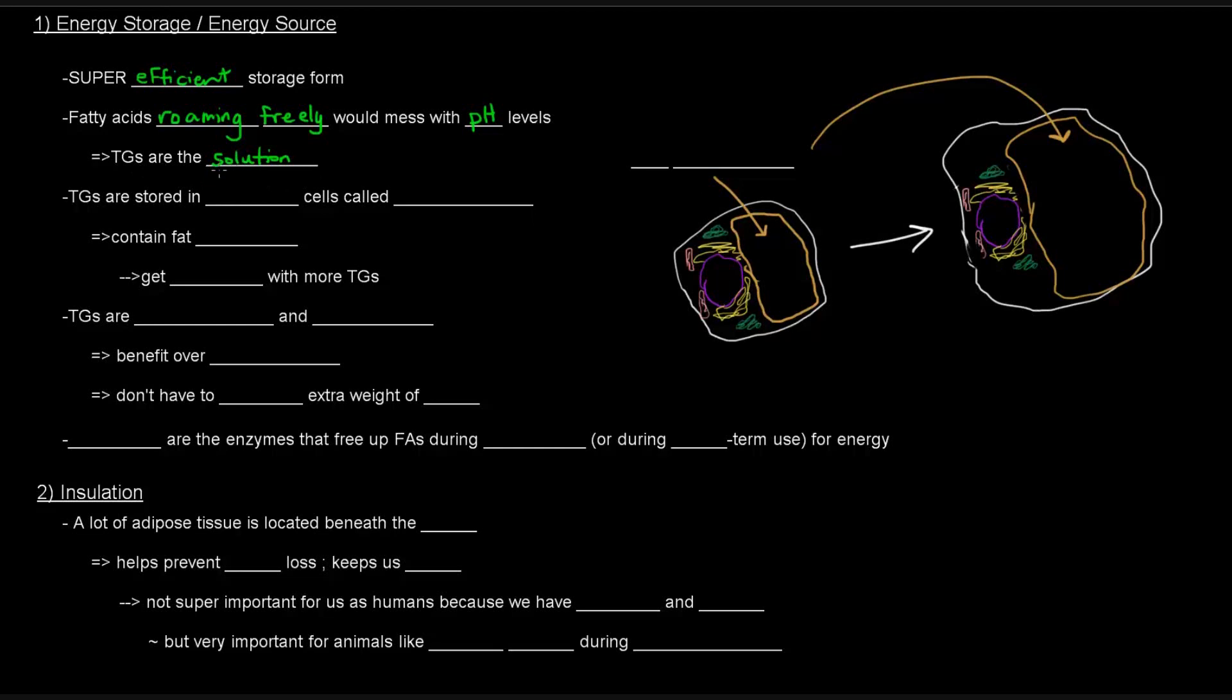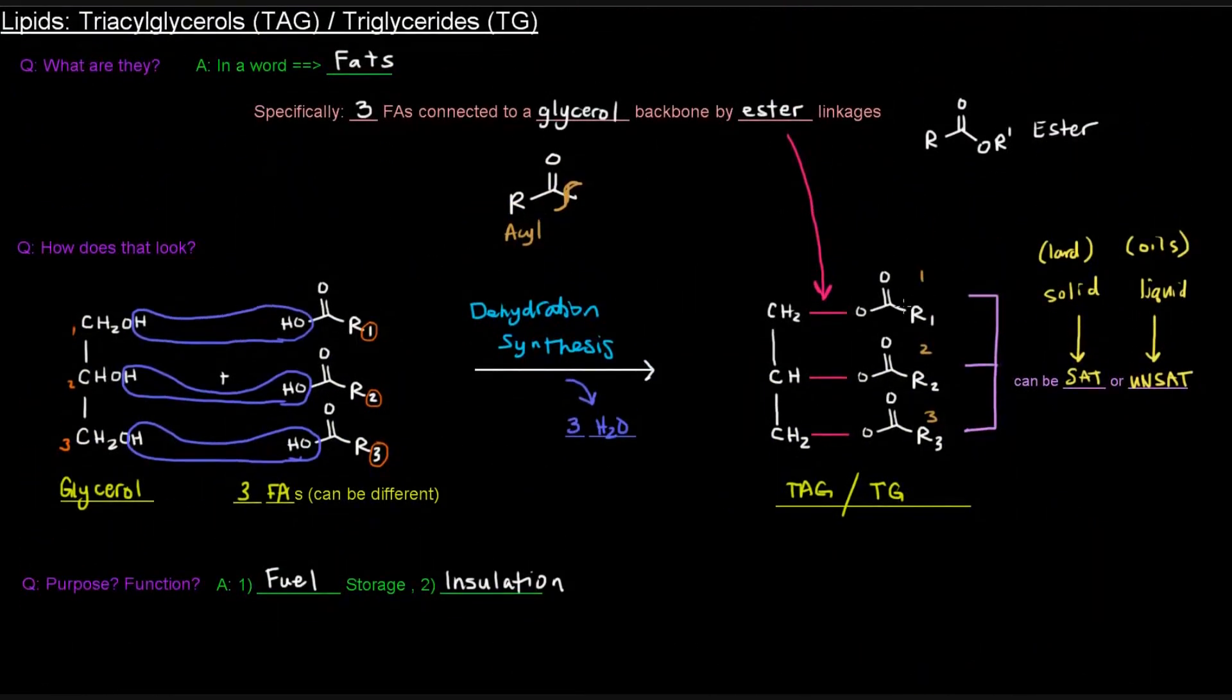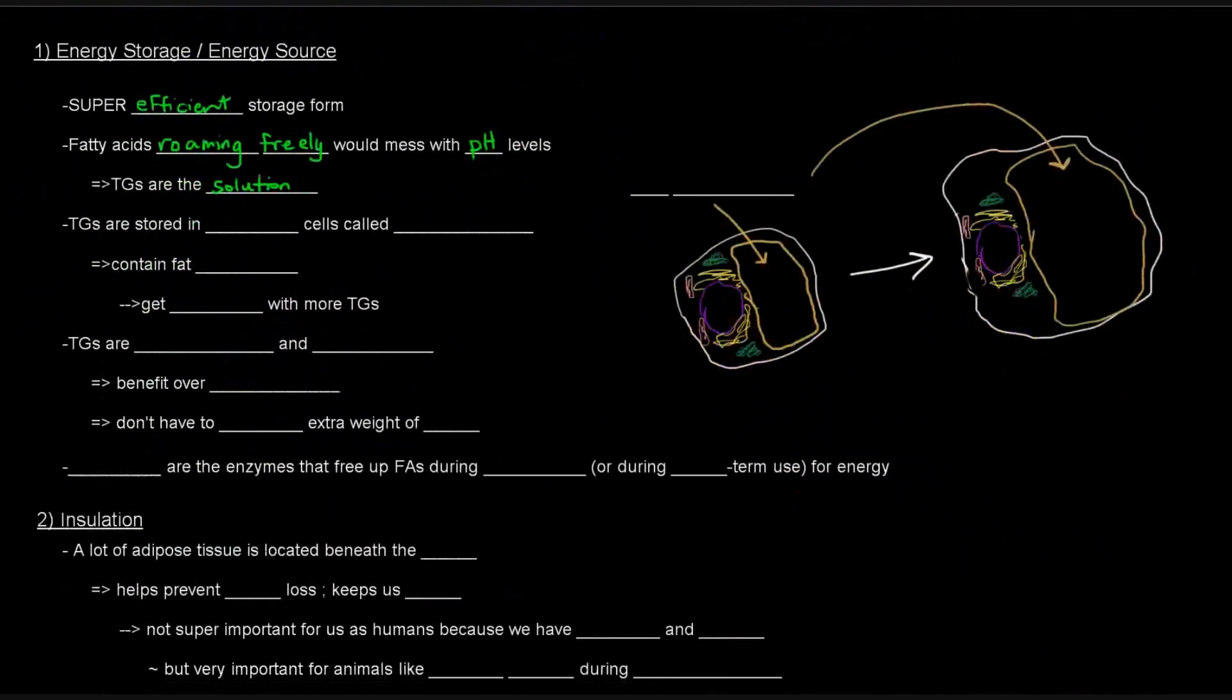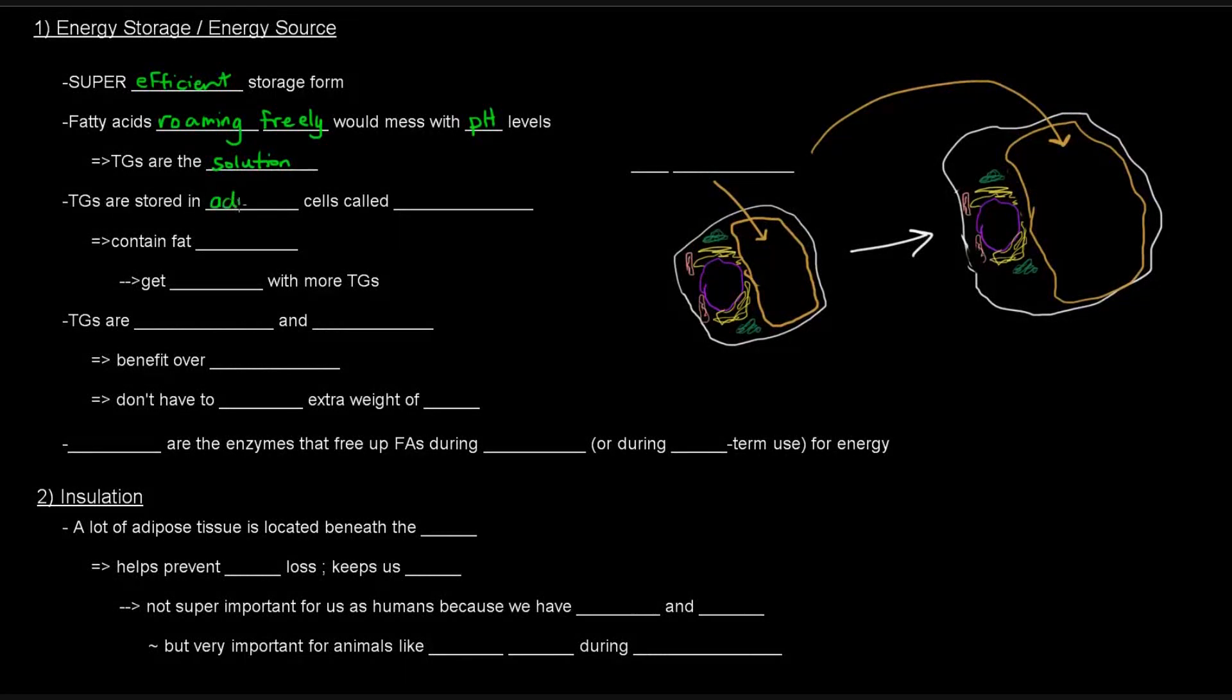Triglycerides are basically the solution to that problem because we don't want our pH levels to be altered in any way. Even the slightest change in pH in our body could be detrimental to proteins and could really lead to death. So, if we have an excess of fatty acids, we can store them in these triglycerides. In the triglyceride structure, since these fatty acids are no longer in their acid or carboxylate form, they'll no longer alter pH levels.